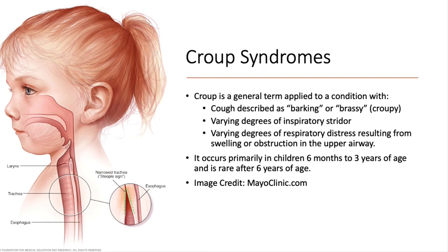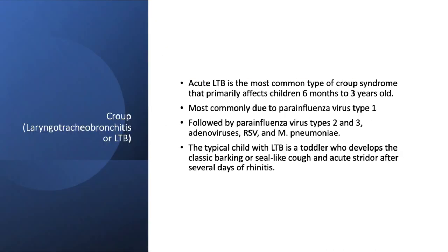Because airways are smaller in younger children, we typically see these conditions in younger children from 6 months to 3 years of age, and croup is very rare after 6 years of age. For the purpose of this video, we're going to refer to croup and laryngotracheobronchitis as the same thing, but keep in mind there are several different croup syndromes.